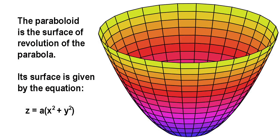Moving now to three dimensions, a paraboloid is the surface of revolution of a parabola. It's a quadratic surface described by the equation z equals a times x squared plus y squared.